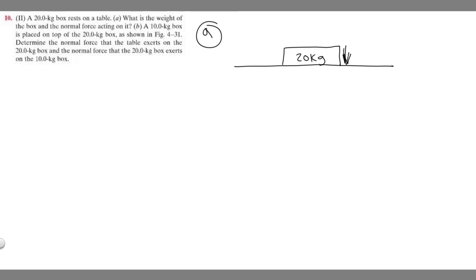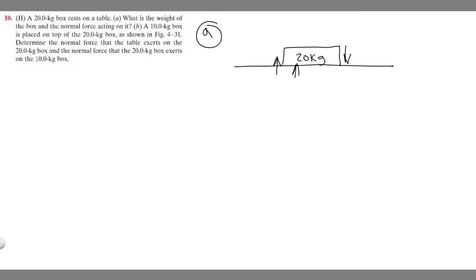Whenever you have a force acting on the ground, the normal force is basically going to be the same thing but acting in the opposite direction, because the forces counteract each other so the box stays still. We want to find the force acting on the ground, because we know the normal force is just the opposite of it.